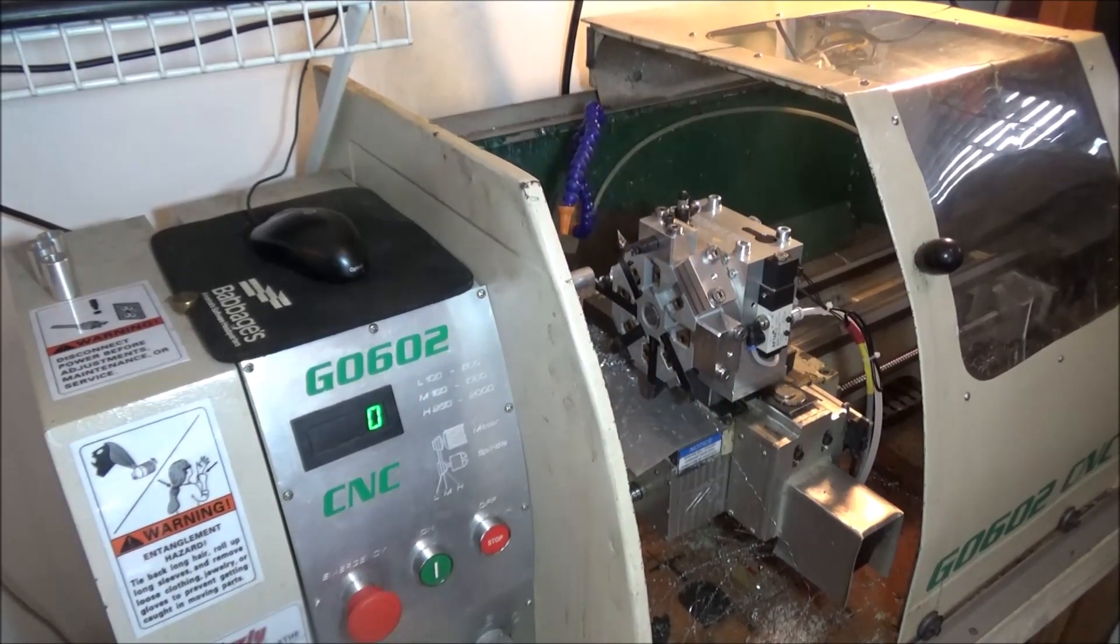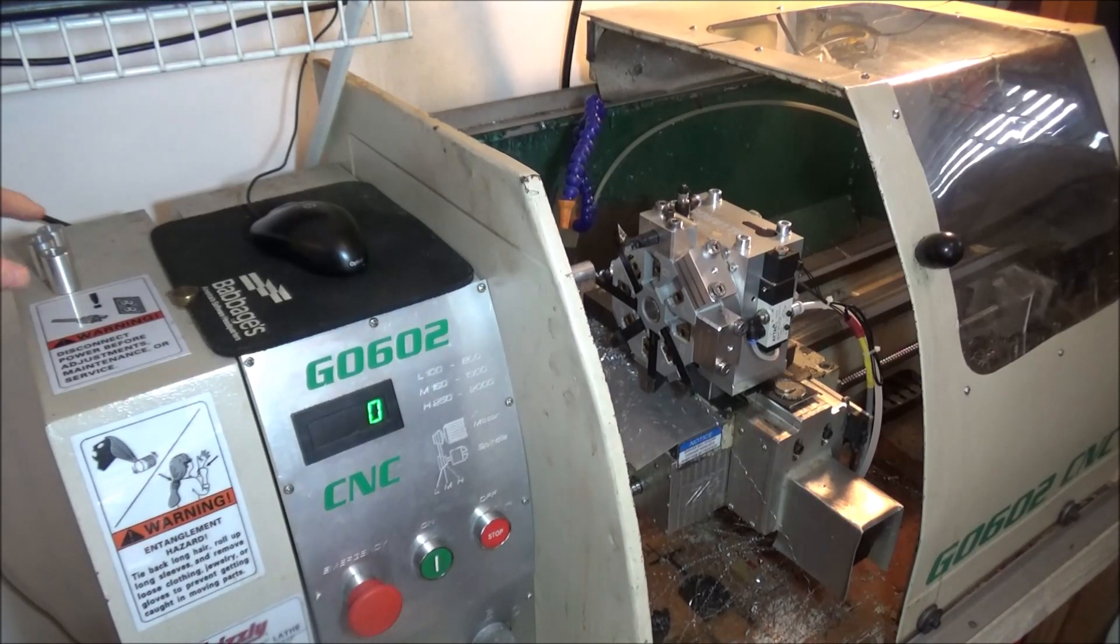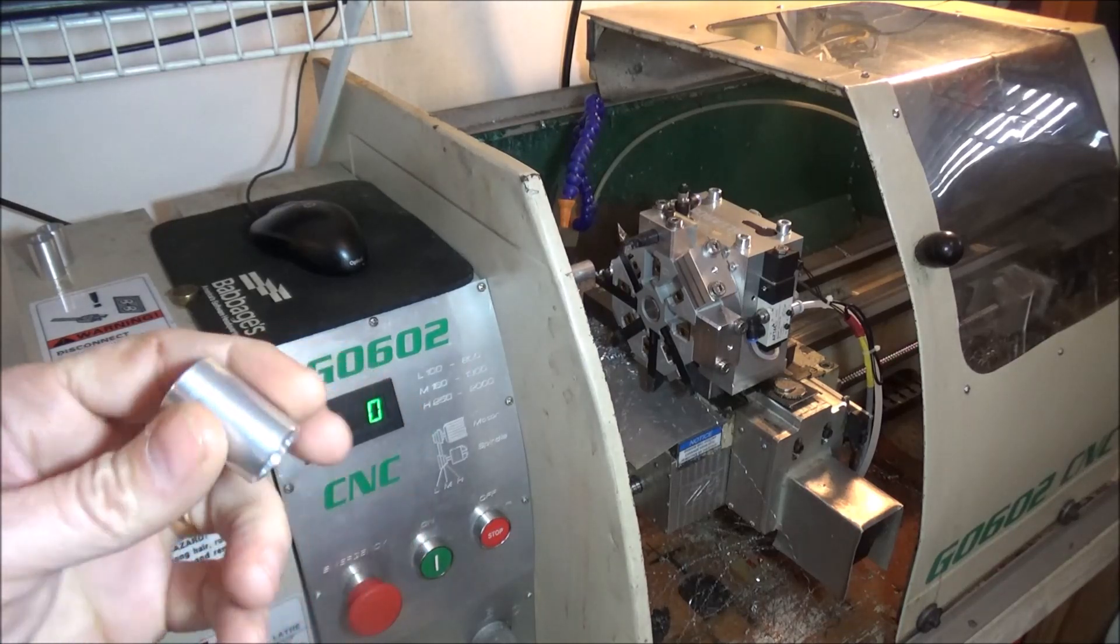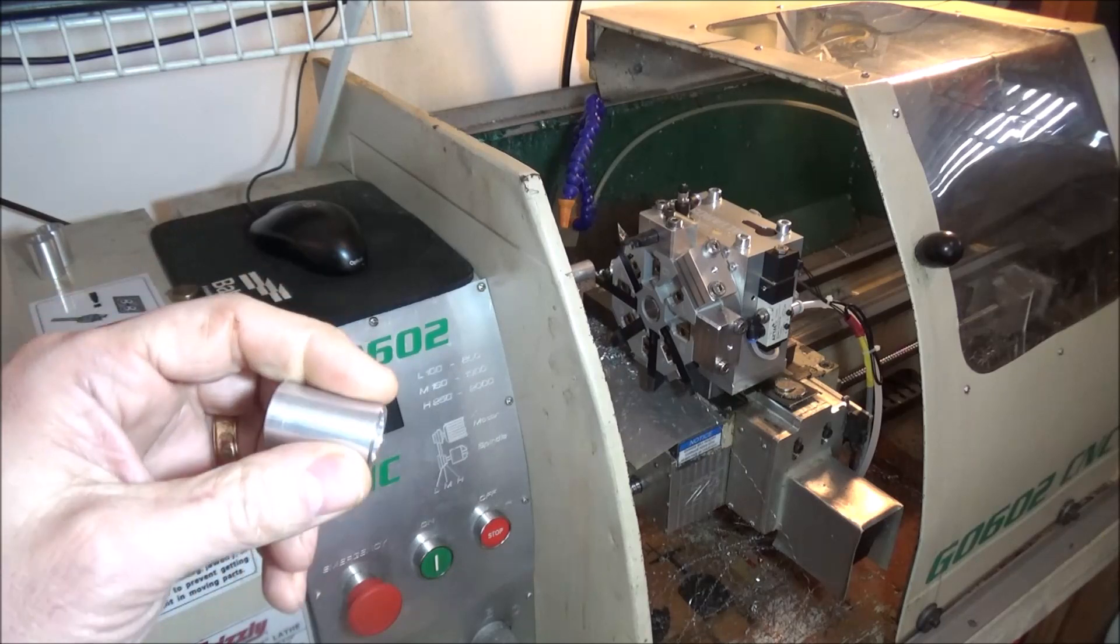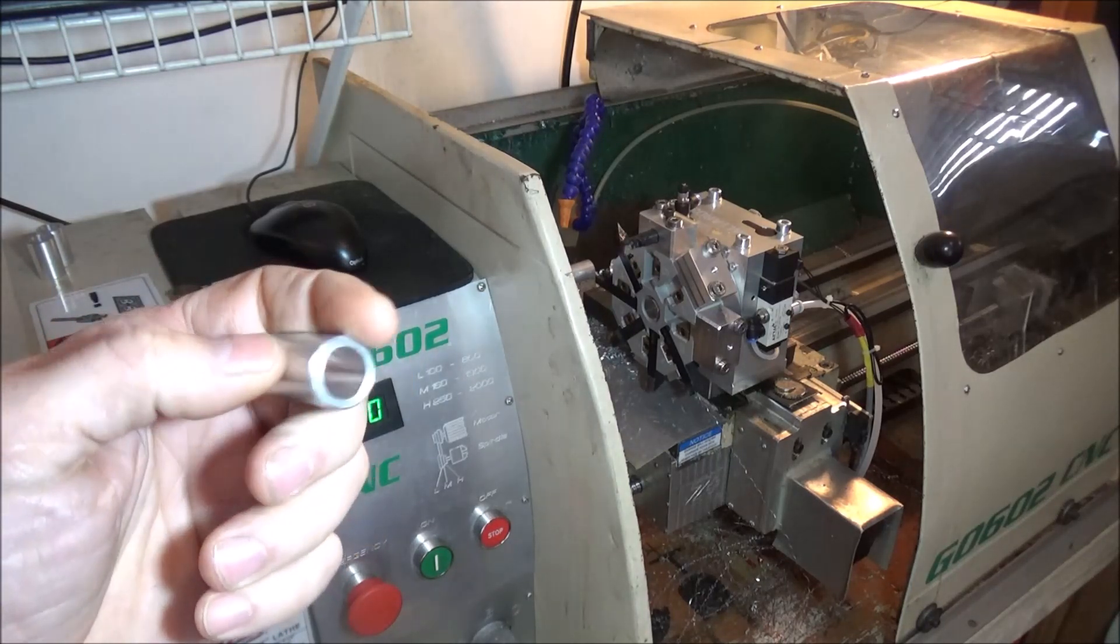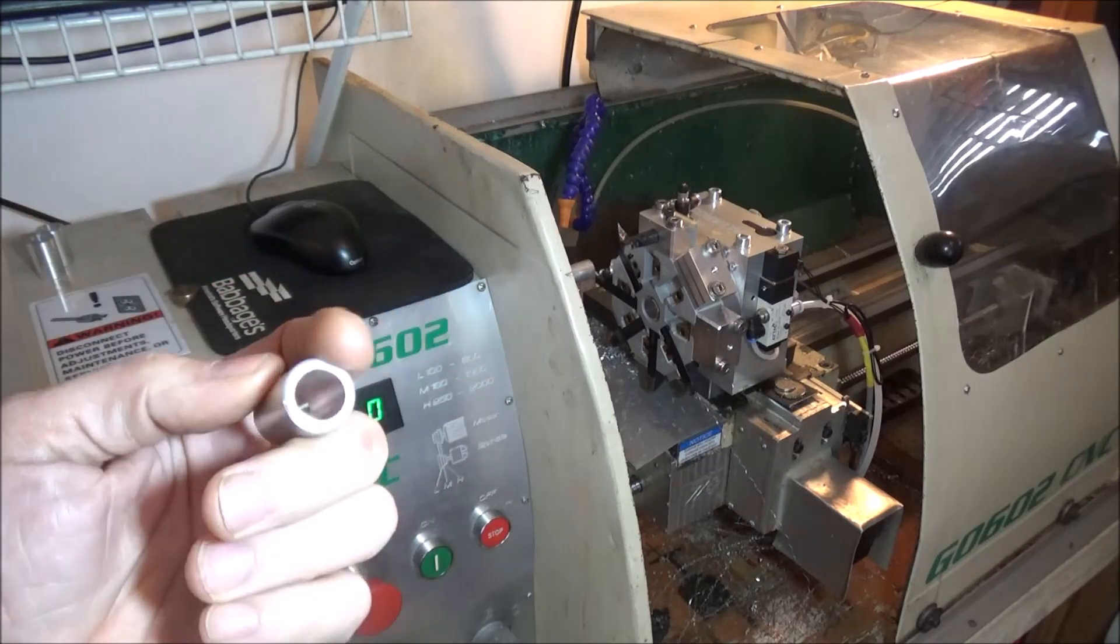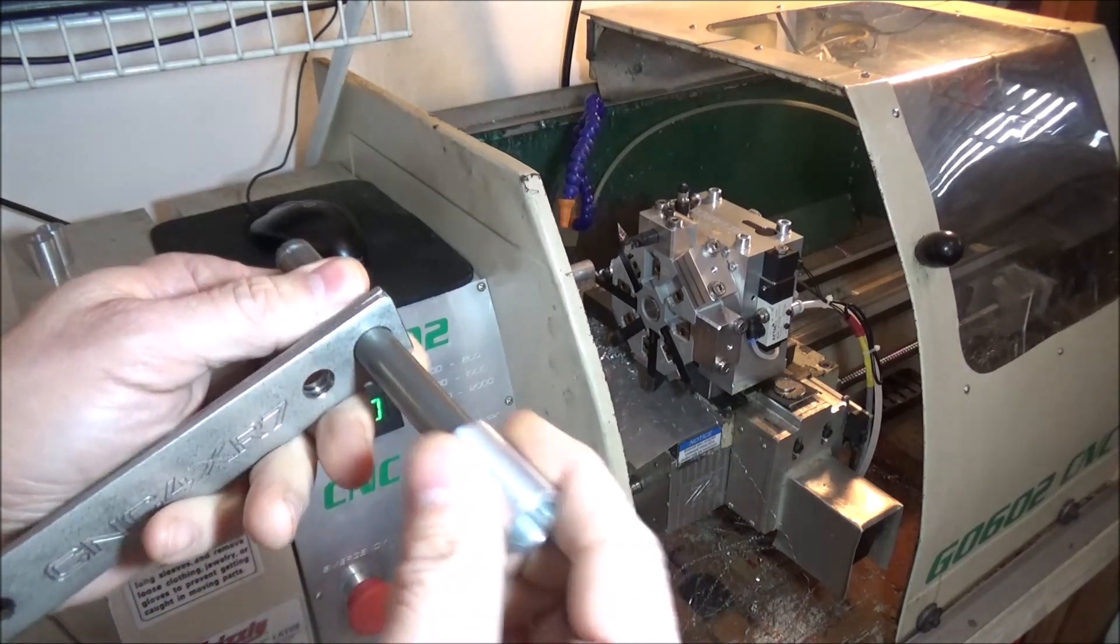Hey guys, well today I'm out here on the G0602 and I'm turning some of these spacers for the X2 power drawbar. Now this is just some three-quarter inch OD half inch ID. We're just cleaning up the OD as well as the ID and then putting a slight chamfer and cutting them to length.